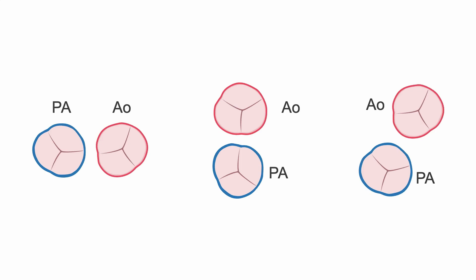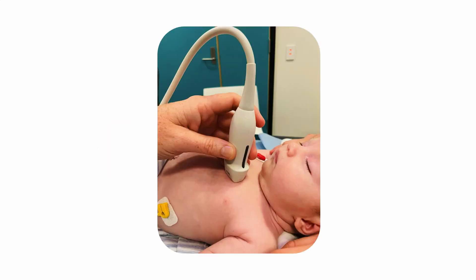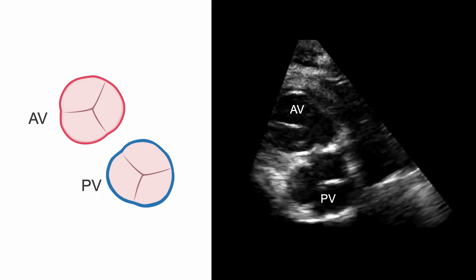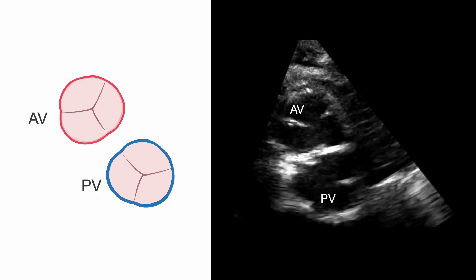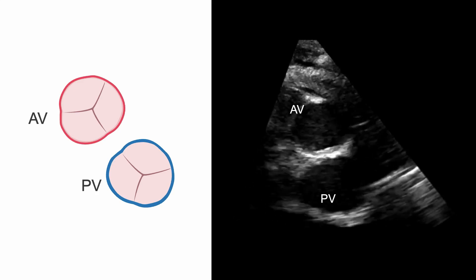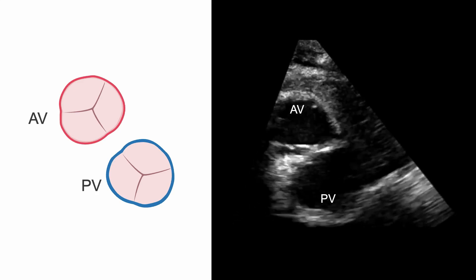It's important for the surgeon to be aware of the position of the great vessels prior to surgery. The parasternal short axis view is used to profile the aortic and pulmonary valve leaflets. Both the aortic valve (AV) and pulmonary valve (PV) are often normal with thin and mobile leaflets.